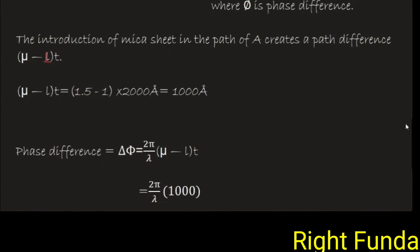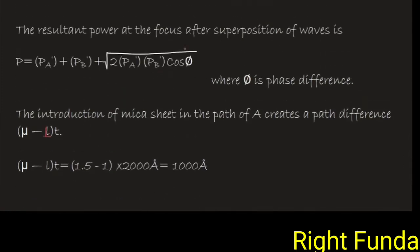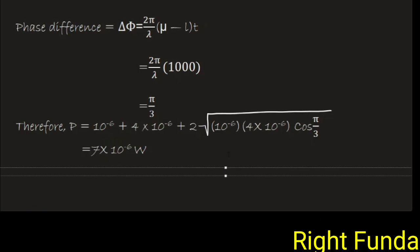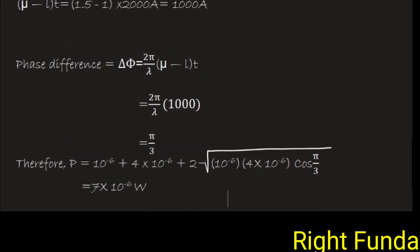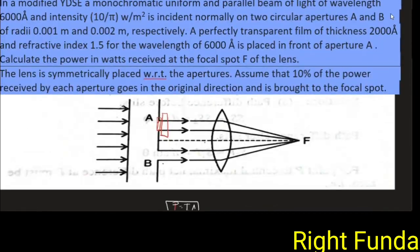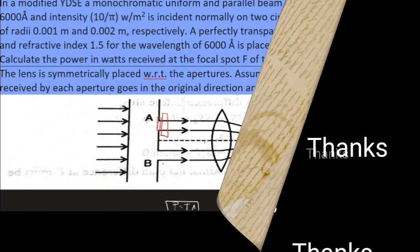This delta phi value I will substitute in this equation. PA is calculated, PB is there, all we substitute. We will be getting easily the value of the resultant power. If we substitute the values and calculate, we will get 7 times 10 to the power minus 6 watt. This is the resultant power when 10 percent of rays pass through the lens system, focused through the lens system, with the film introduced in front of one of the slits.